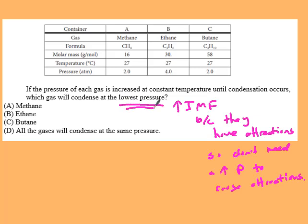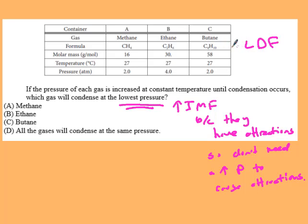For condensation to occur at the lowest pressure, we want the highest IMF because molecules with attractions don't need as high a pressure to condense. These compounds are all LDF because they all have only C and H and are nonpolar. The most electrons would have the highest LDF—butane has the highest molar mass and therefore the most electrons, making it the correct answer.